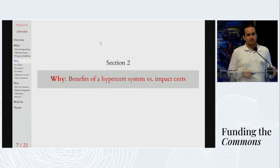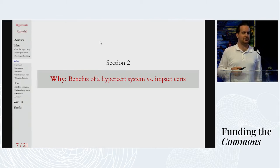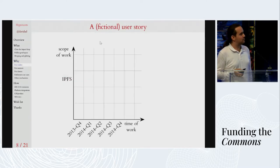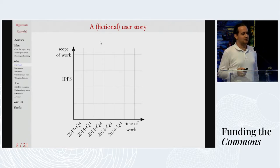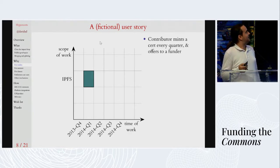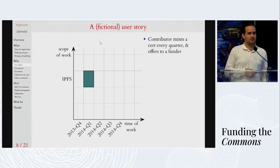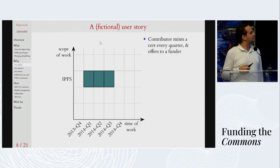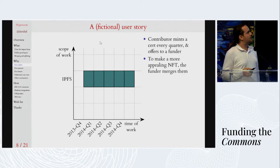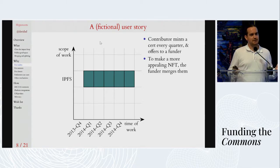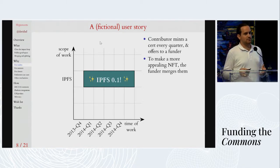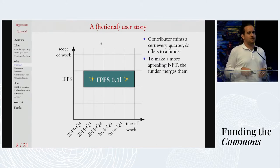Why support this seemingly complicated operation? Let me give you a user story. Imagine hypercerts existed as a functioning market in 2013, and Juan, making IPFS, mints a hypercert every quarter and offers it to his funder in exchange for funding. At some point, when the work reaches critical mass, the funder can make a more appealing NFT by merging them into one hypercert representing inventing the first version of IPFS — rather than just one quarter of work — even though the funder wanted to do funding one quarter at a time while it was happening.